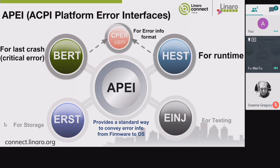BERT is for last crash. It's used to record errors in the emergency when the OS crashes. BERT provides key information about the error block region. ERST is for saving error logs into persistent storage. Error inject is for APEI testing. They are both operation abstractions.